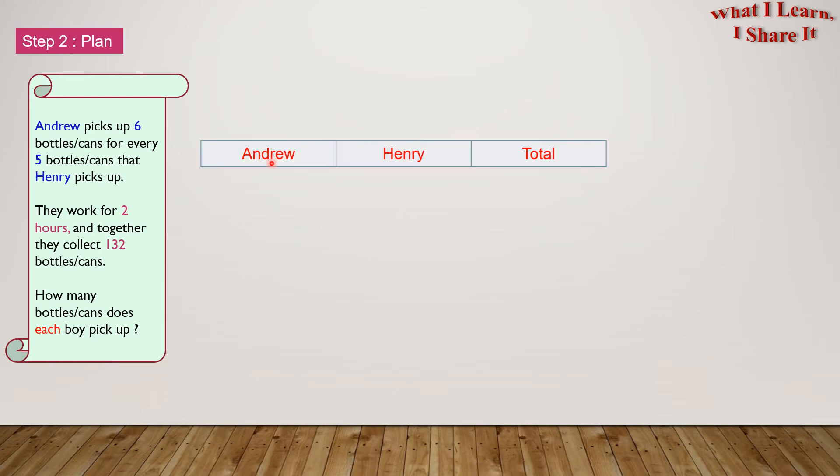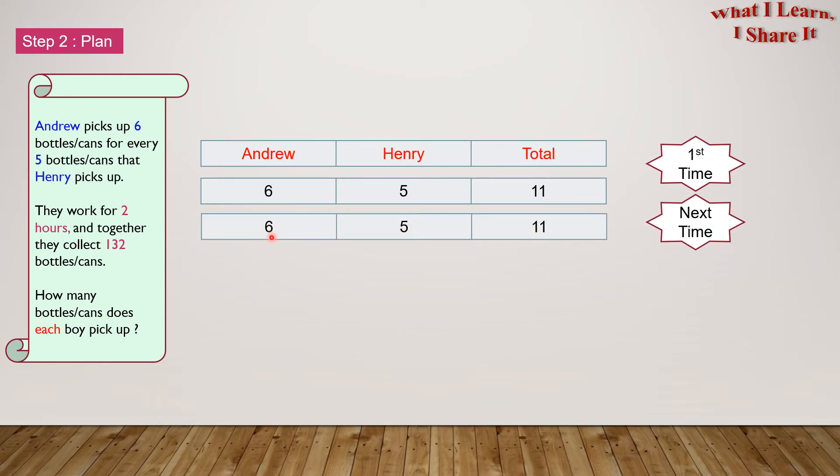Here is our table. There is Andrew, there is Henry, and there is the total. The first time, Andrew picked up 6 and Henry picked up 5, so the total they picked up was 11. And the next time, Andrew picked up another 6 and Henry picked up another 5, and then the total is another 11. And then every time, it's going to be like this. Andrew picked up another 6, and Henry picked up another 5, and the total is another 11.